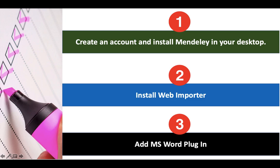Before starting how to use Mendeley, make sure you have done these three things. First, create an account and install Mendeley desktop. Second, open Mendeley, go to Tools, and install the web importer. Third, add the MS Word plugin into your Word document. I will show you how to do this.